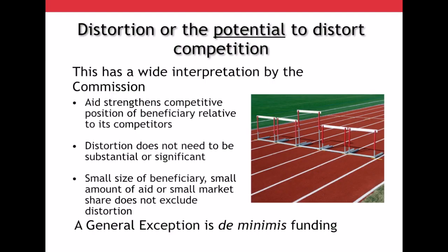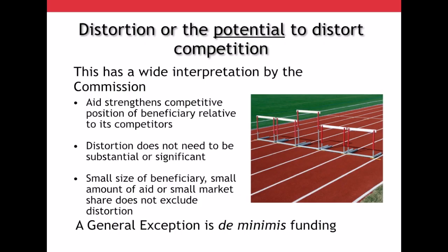Next, the distortion or the potential to distort competition. This has a very wide interpretation by the Commission. This is aid which strengthens the competitive position of a beneficiary relative to its competitors. The distortion does not need to be significant — even a small amount can be considered distorting the market. The size of the beneficiary does not matter either. The main exception to this is de minimis funding, which is considered by the Commission to be too small to have an effect on the internal market. For more information about de minimis regulation, speak to the state aid team.